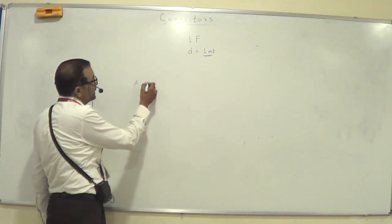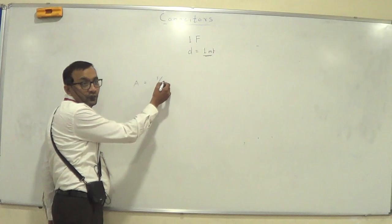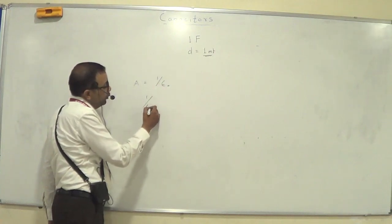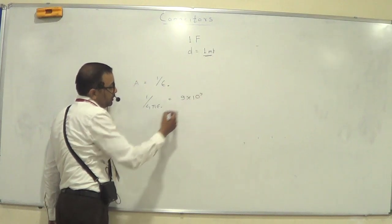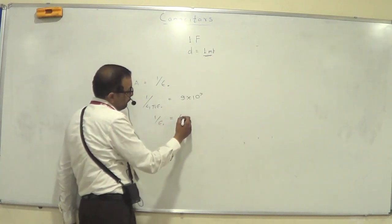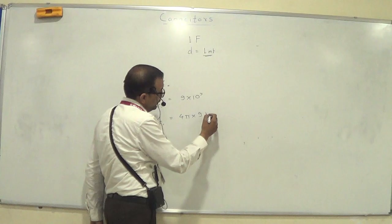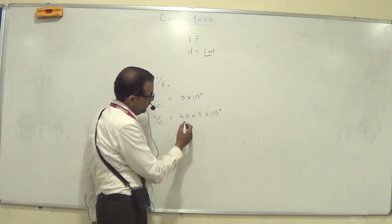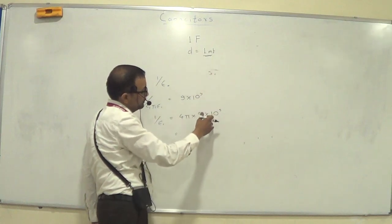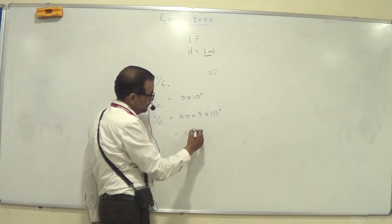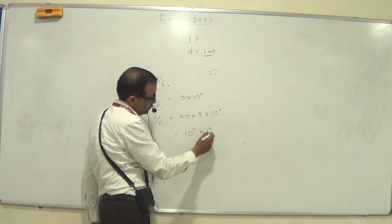How much you got A as equal to? 1 by epsilon not is what? So 1 by 4 pi... 9 into 10 to the 9. So that is 4 pi into 9 into 10 to the 9. That is 6 into 3. So this is around 100. So you can say that 10 to the 11 meter square.